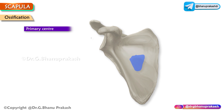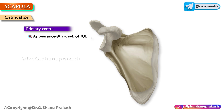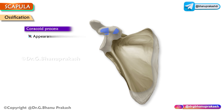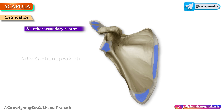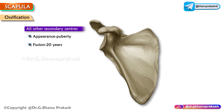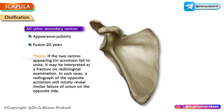The primary center appears in the eighth week of intrauterine life and fuses at 15 years. The coracoid process center appears in the first year of life and fuses at 15 years. All other secondary centers appear around puberty and fuse by the 20th year. An important point: if the two centers for the acromion fail to unite, it may be interpreted as a fracture on radiological examination. In such cases, a radiograph of the opposite acromion will mostly reveal similar failure of union on the opposite side.